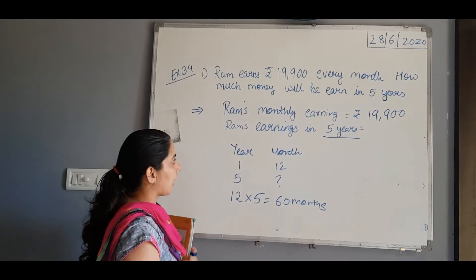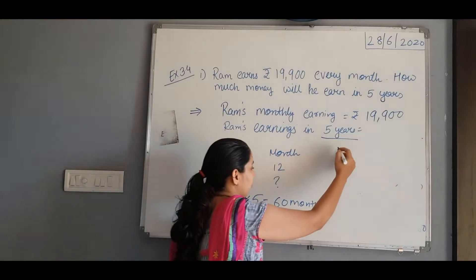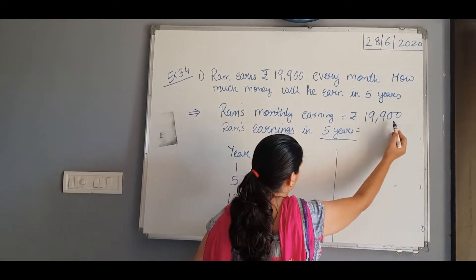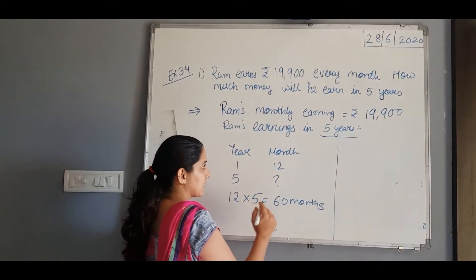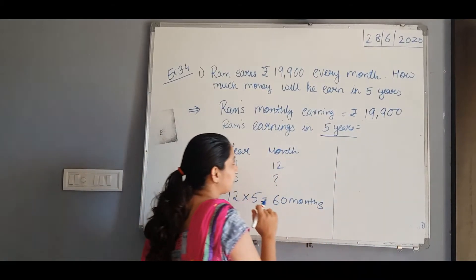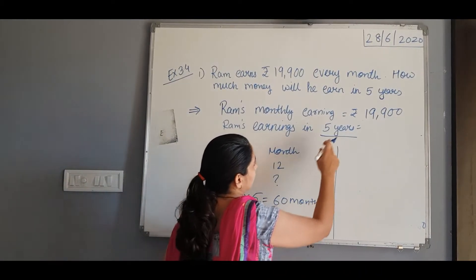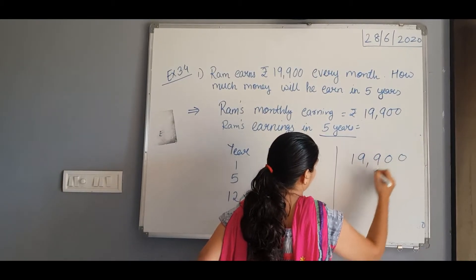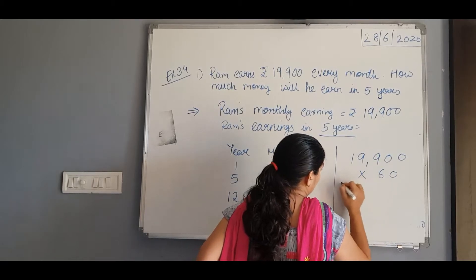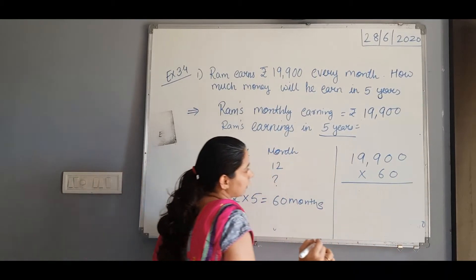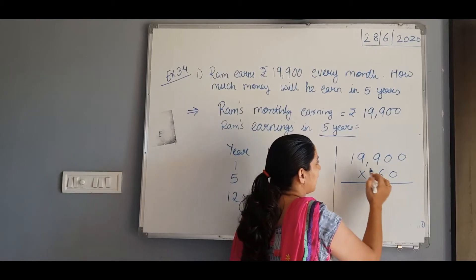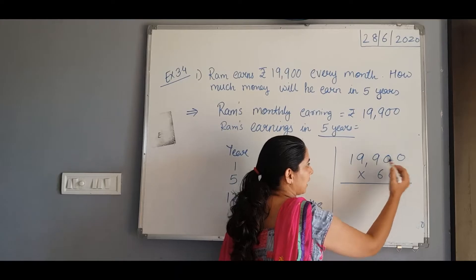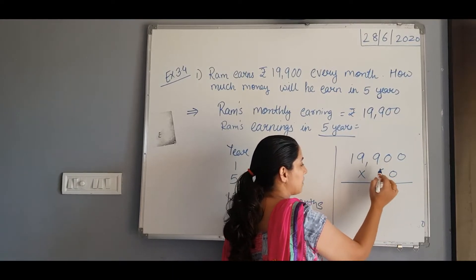Now we will find Ram's earning for 60 months. For that, we need to multiply his monthly income that is 19,900 by 60. By multiplying we will get his income for 5 years. So we will start multiplication: 19,900 multiplied by 60. Multiplication we have already learned. We will just multiply 199 by 6 and then put three zeros at the end of the product.